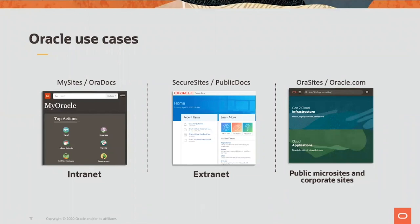I'm going to talk about three different use cases, which I'm sure every enterprise has. I'm responsible for implementation for Oracle, and I partner very closely with Tejas and team to leverage the strengths of the product. There are three typical use cases in any company: first is an intranet-centric use case, only meant for employees; second is what we call an extranet use case, where you may need to collaborate on content with an external partner, customer, or agency; and third is a typical use case for a public external-facing corporate site or microsite.